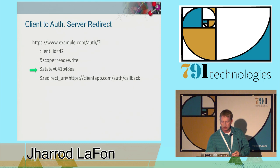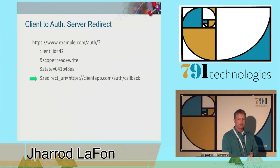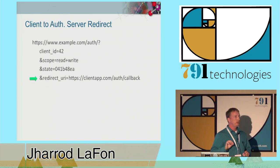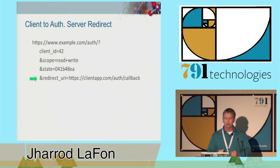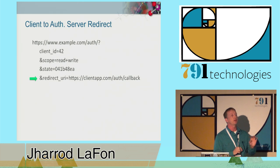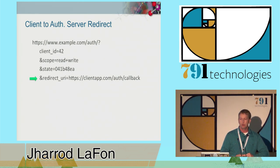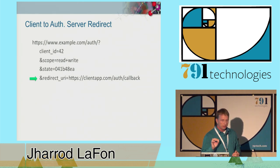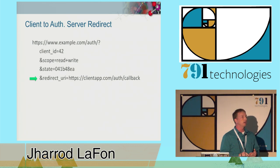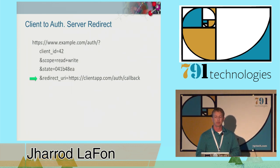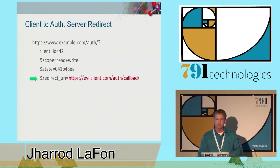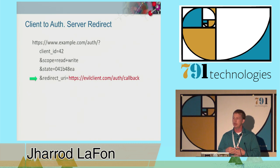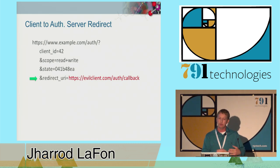And finally, we have the redirect URI. This is where the user is going to be redirected to after they have authorized access. The client specifies this when it registers, and the authorization server is going to look at this URI and make sure that it matches what the client said was a valid URI earlier. Because if it didn't, you could put something evil there and redirect the user anywhere you wanted to after they've authorized access.